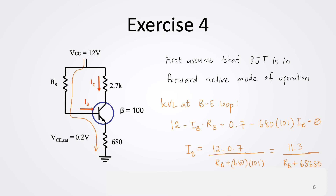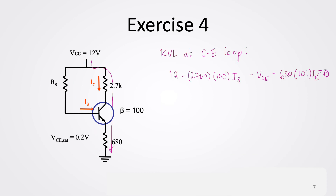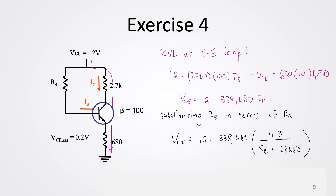After getting the KVL equation at the base-emitter loop, we proceed to the KVL equation at the collector-emitter loop. From this loop: 12 minus the voltage drop across the 2.7 kΩ resistor (written as 2700 times beta times IB) minus VCE minus 680 times 101 times IB equals zero. From this we get an expression for VCE in terms of IB, and then substituting our earlier expression, IB is replaced with 11.3 divided by (RB plus 68,680).